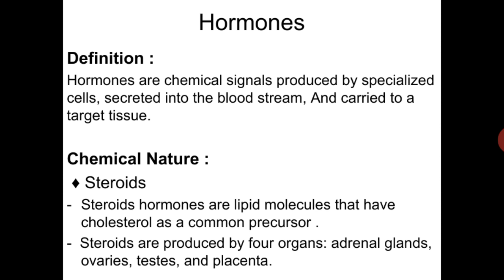What is the hormone? As previously mentioned in previous lectures, hormones are chemical signals produced by specialized cells that are secreted into the bloodstream and carried out to the target tissue. We also mentioned the chemical nature of the hormone — that a hormone may be a steroid, protein, amines, or amino acids. The steroid hormones are lipid molecules that have cholesterol as a common precursor.